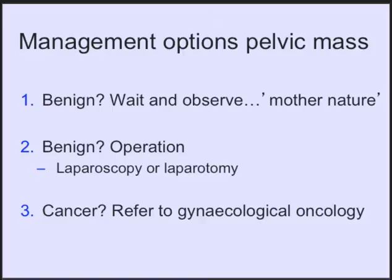What are the options if we find that a woman has a pelvic mass? There are basically three options. First, if the cyst is benign, we could wait and observe and allow mother nature to do its healing work. Sometimes, if there's a benign cyst, we would like to remove it either laparoscopically — the preferred procedure — or with a laparotomy if the mass is very big. If we suspect cancer, then referring to a gynecological oncology center is most appropriate.